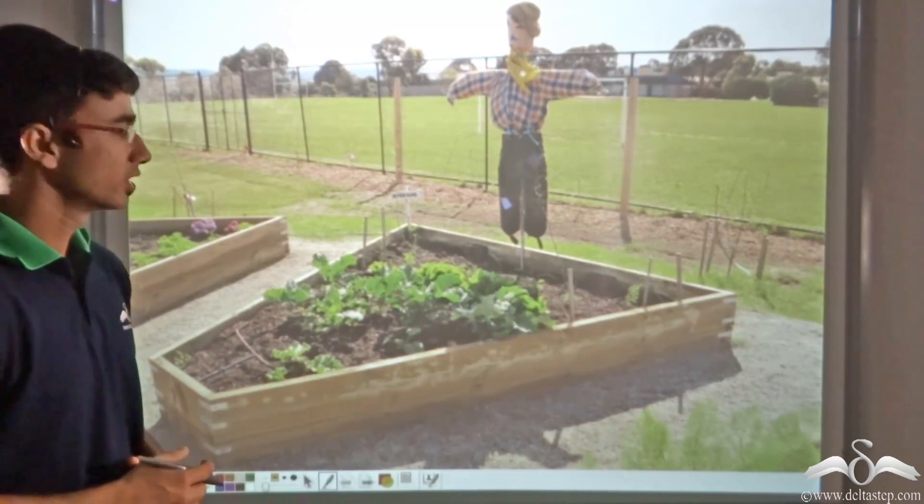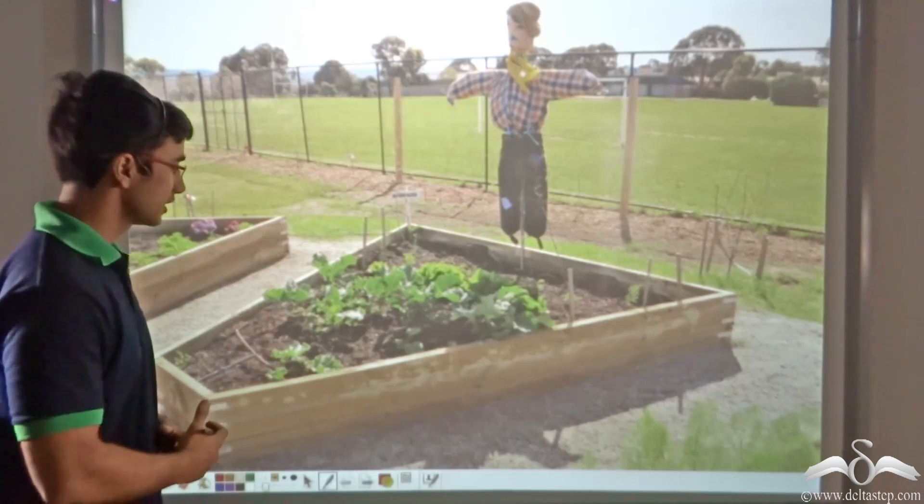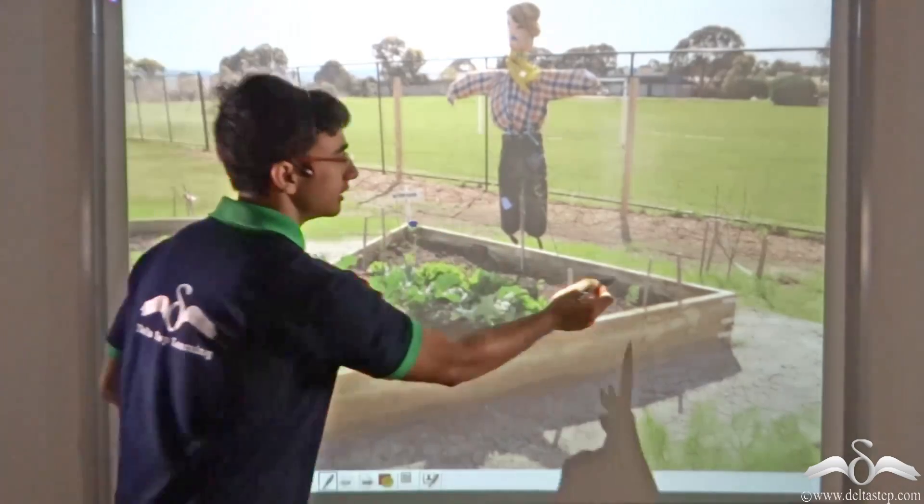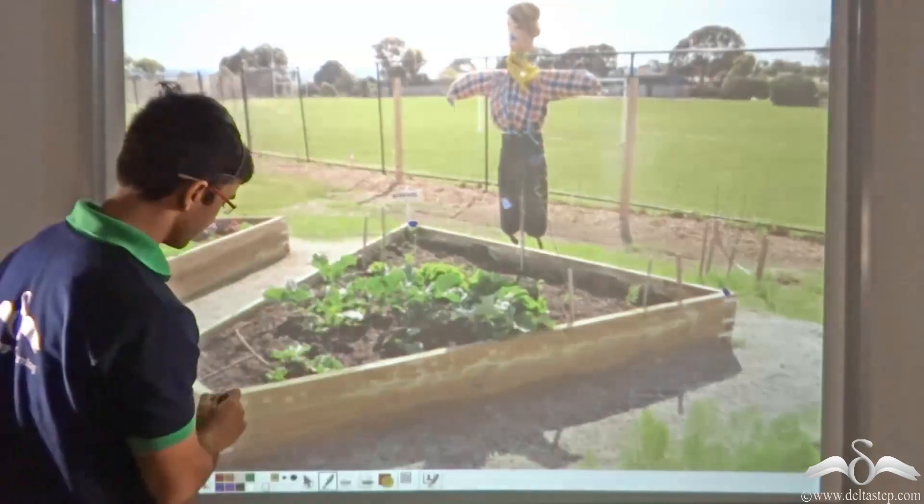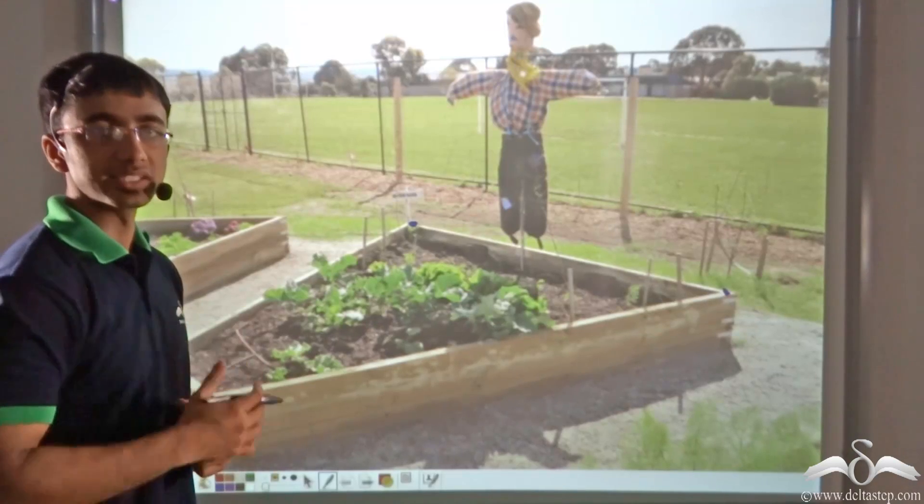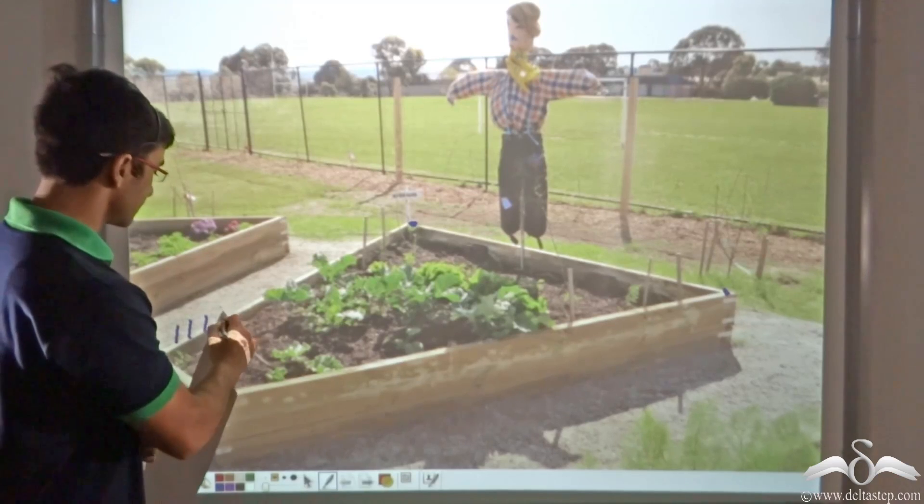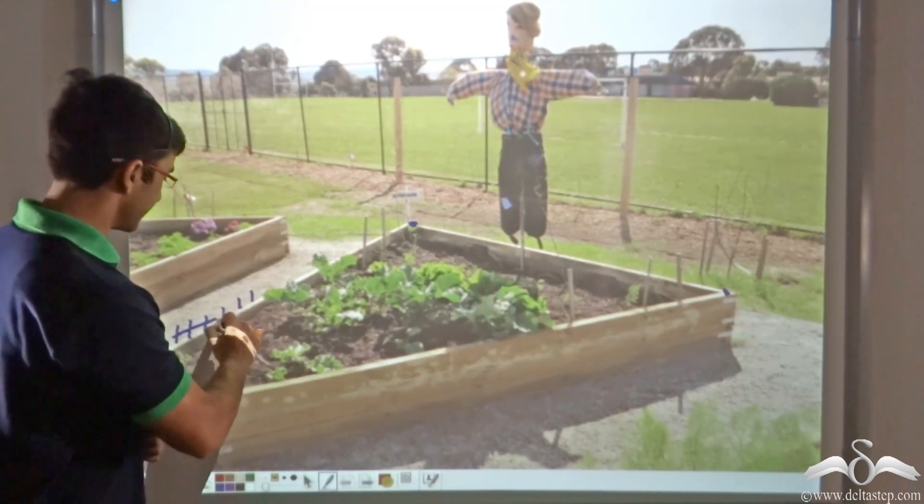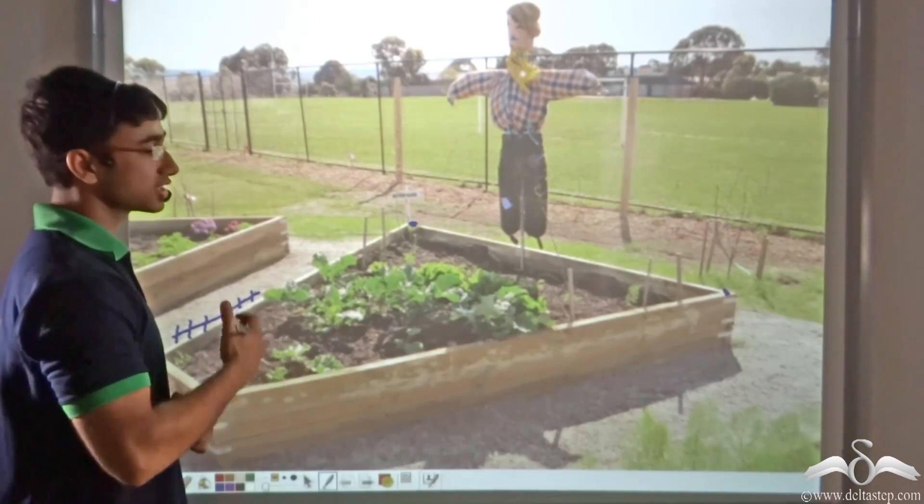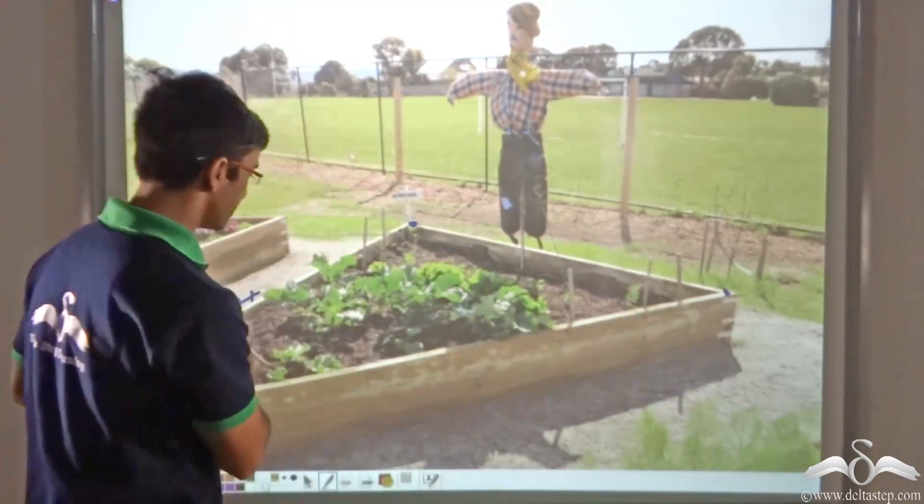There is a farmer Suresh who has a plot of land that is a quadrilateral. As you can see, this particular plot of land is in a shape that resembles a quadrilateral. Now Suresh wanted to do two things. Firstly, he wanted to put a fence around the entire plot of land. Around this entire plot he wanted to put a fence, and Suresh also wanted to put a net over the entire plot.